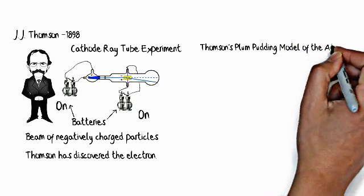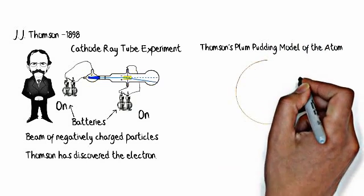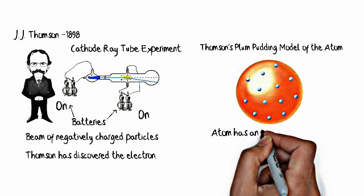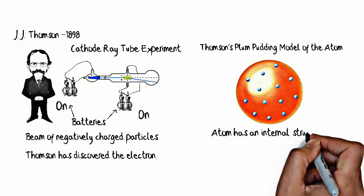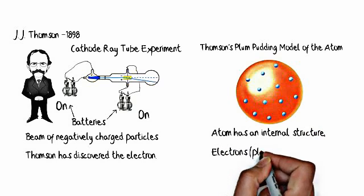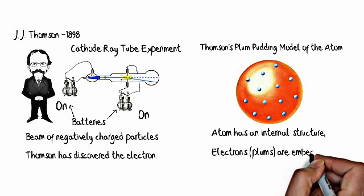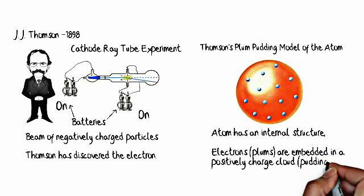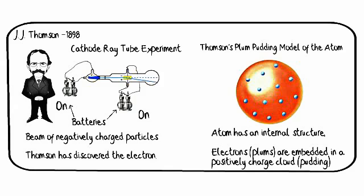So now what Thompson has to do is he has to explain how these negatively charged electrons exist. So he comes up with the plum pudding model of the atom. In which now the atom has an internal structure. The plum pudding model basically states that the electrons are plums embedded into a positively charged cloud which is the pudding. You could also think of this as like a chocolate chip cookie model. The electrons would be chocolate chips and the positively charged cloud would be the dough. He called it the plum pudding model being an English scientist and plum pudding being a popular dessert during that time in England.